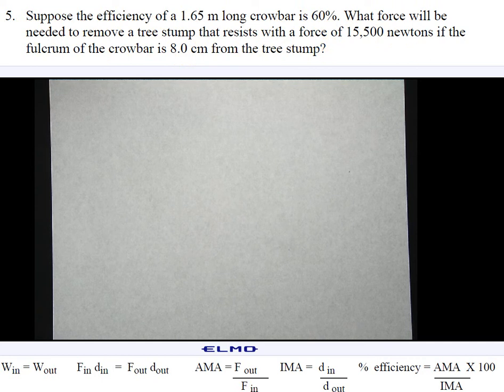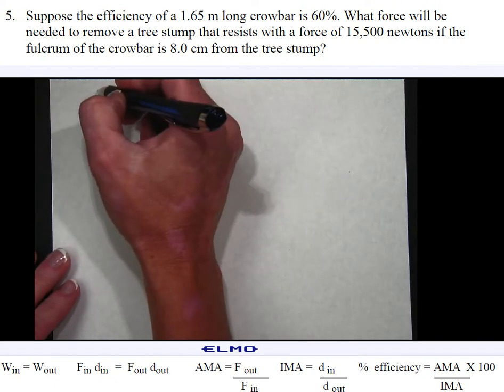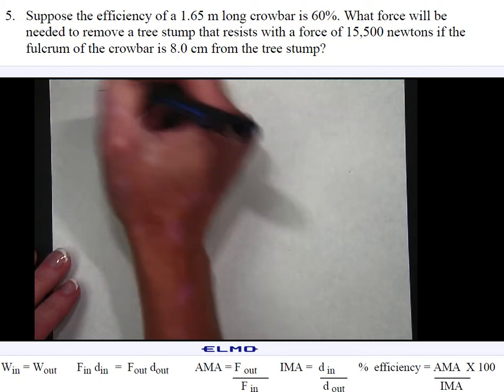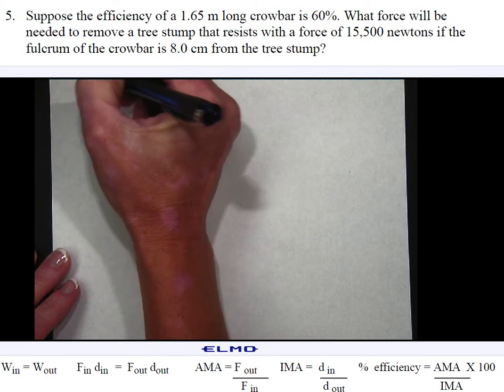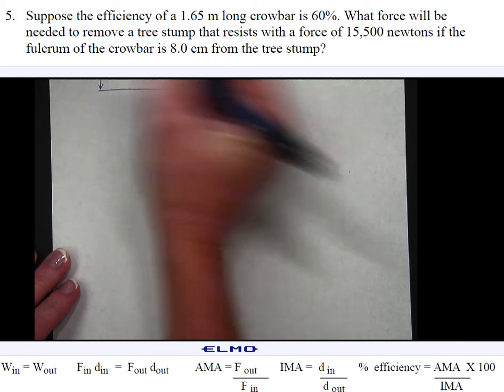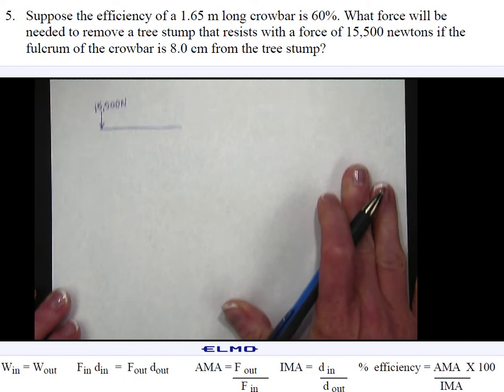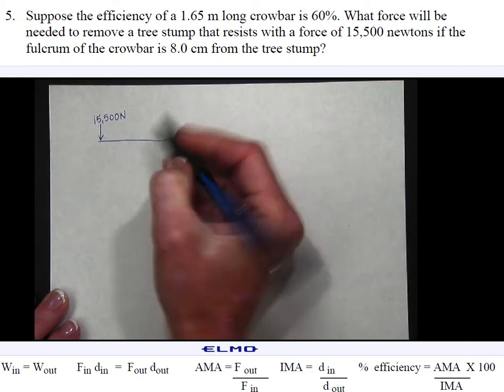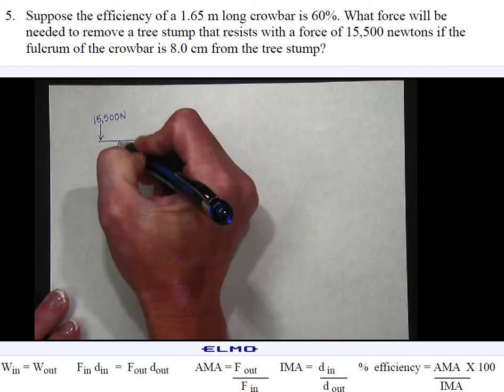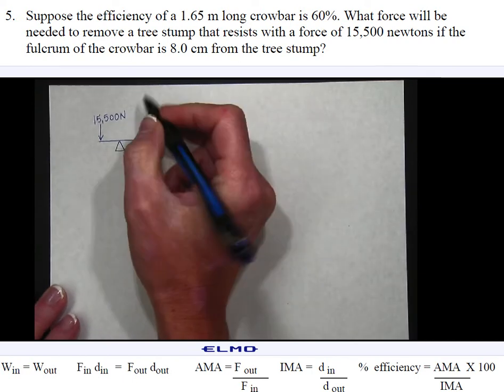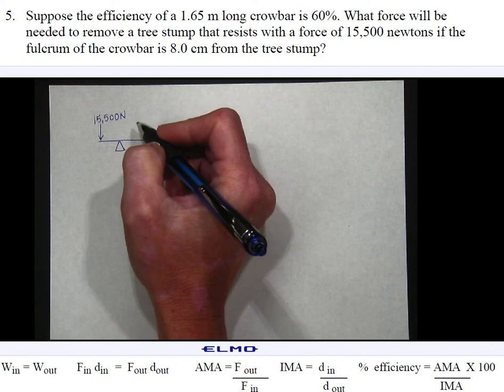So I want to try to draw a picture to help me understand what's happening here. We have a crowbar and we have a tree stump providing some resistance at 15,500 newtons.